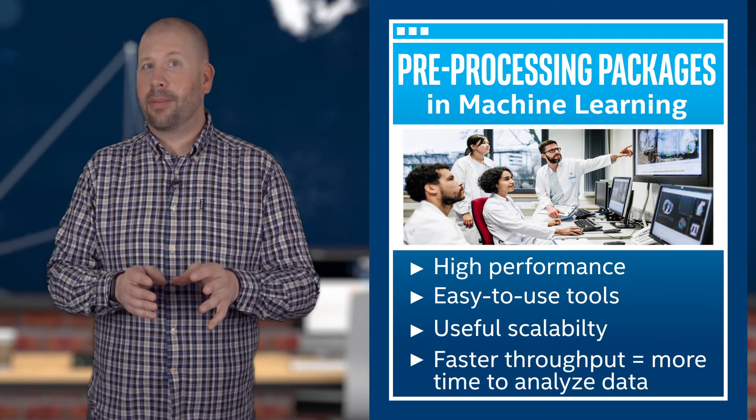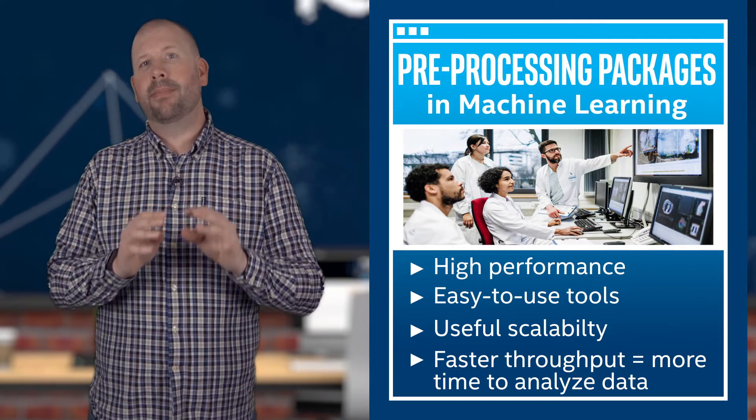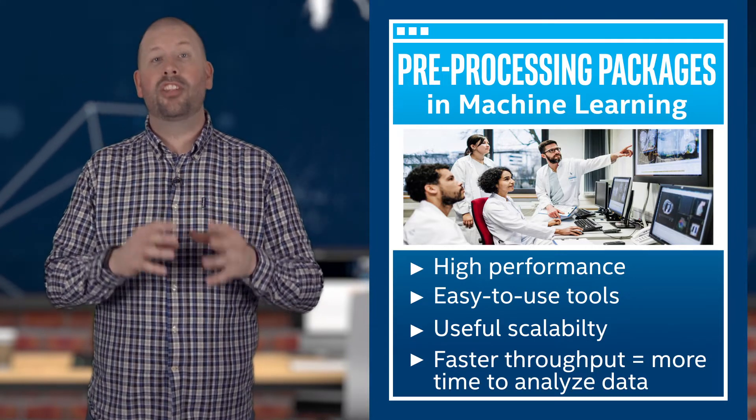The faster the data pre-processing can happen, the more time data scientists gain to analyze the results. We uncovered a need from data scientists who wanted a scalable Python solution for data pre-processing that ran faster on their Intel Xeon CPU-based hardware. To meet that demand, we introduced them to SDC as an enhancement to Numba and Intel distribution for Python powered by One API.